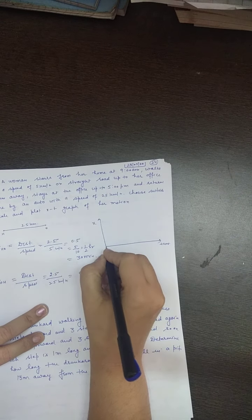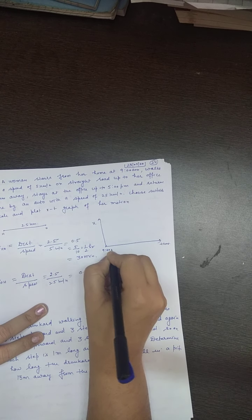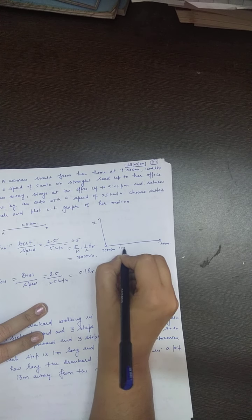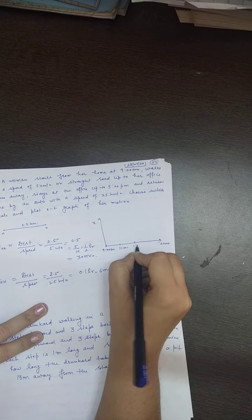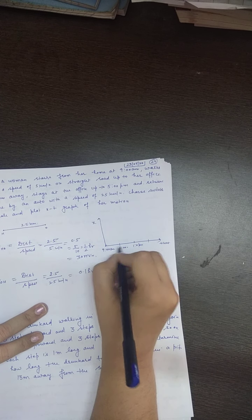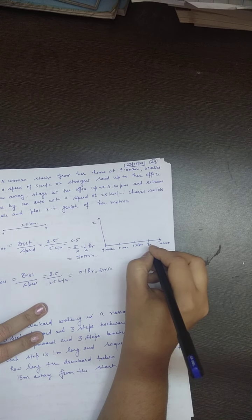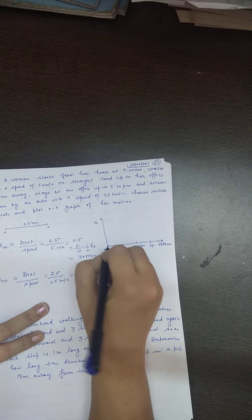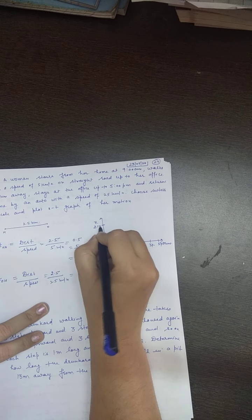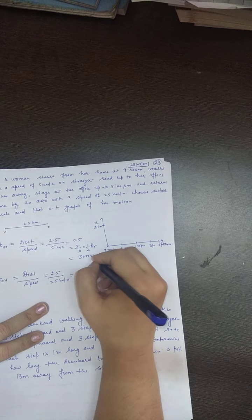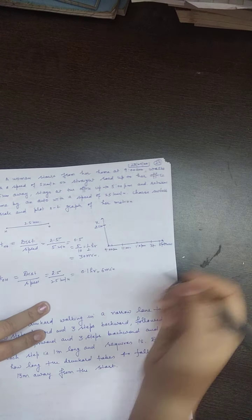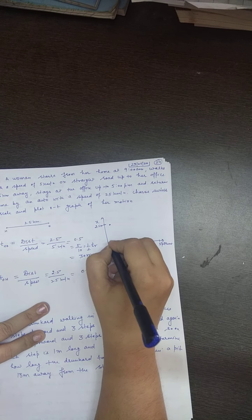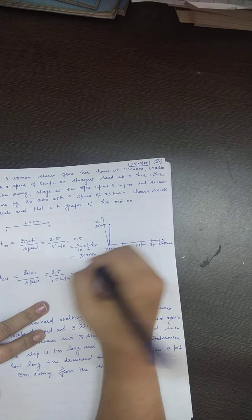So students, if you say this is at 9 AM, she starts from her home. This is 9, and if you take this as 11 AM, this as 1 PM, with a 2-hour gap, 3 PM, and this is 5 PM. How much time will she take to reach the office 2.5 km away? 30 minutes. So at 9:30 she is at the office.